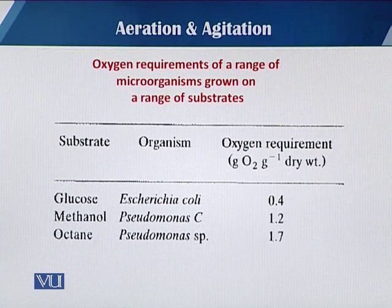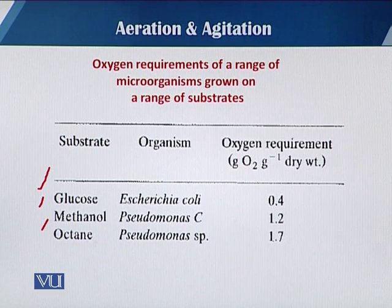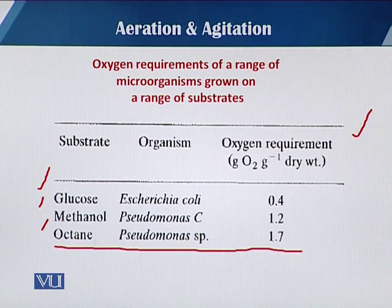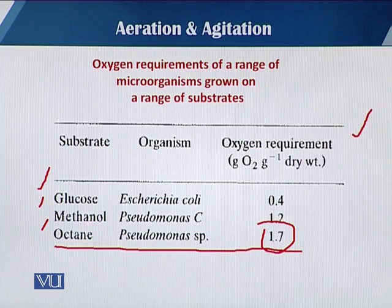The next slide shows the oxygen requirement of different organisms with respect to different substrates. In this table, there are three different substrates: glucose, methanol, and octane. The oxygen requirement when the substrate is glucose for E. coli is 0.4 grams of oxygen per gram dry weight; for methanol it is 1.2, and for octane with Pseudomonas it is 1.7. As mentioned at the start, oxygen requirement increases with higher carbon content — octane has more carbon than methanol or glucose — which is why oxygen demand is highest for octane. Different carbon sources have different oxygen requirements in fermentation.